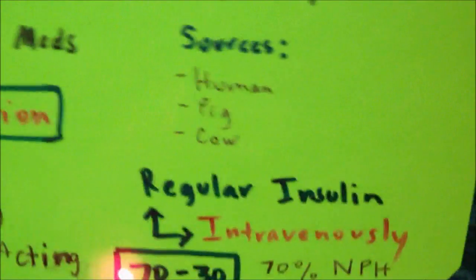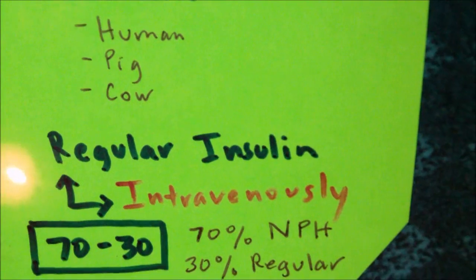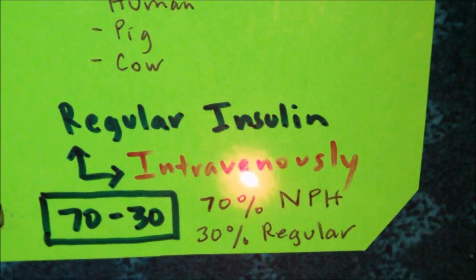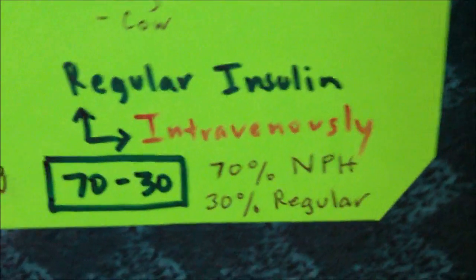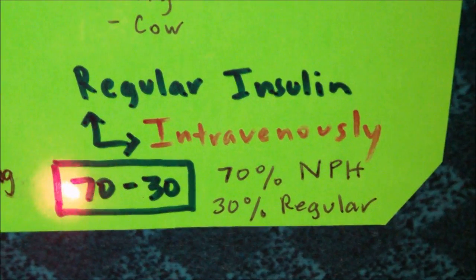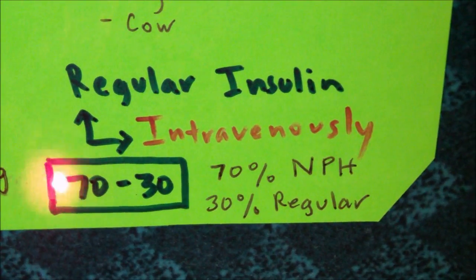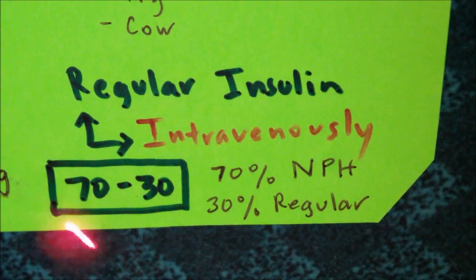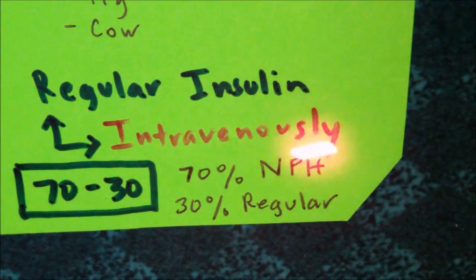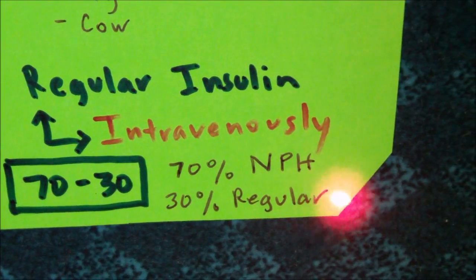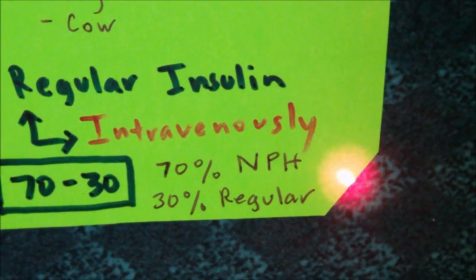For the NCLEX, remember that only regular insulin can be used intravenously. When we are talking about mixed insulin, we are mostly talking about the 70/30 insulin, which is made up of 70% NPH and 30% regular insulin within the vial.